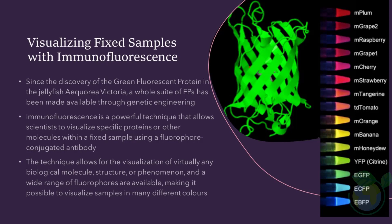Immunofluorescence is a powerful technique that allows scientists to visualize specific proteins or other molecules within a fixed sample using a fluorophore-conjugated antibody. This method is particularly useful in biological research as it allows for the targeted detection of specific molecules within a sample. In this technique, a primary antibody is used to detect the antigen of interest, and a secondary antibody that is conjugated with a fluorophore is used to detect the resulting immune complex. This allows scientists to visualize specific proteins or other molecules within a sample.